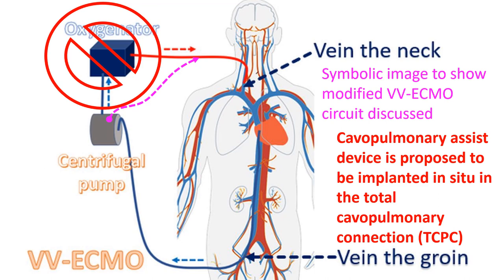It was pointed out that it would not help in case of failing Fontan circulation due to ventricular dysfunction. Another downside suggested was that the presence of a large cannula in the superior vena cava could cause obstruction to the superior vena cava flow.